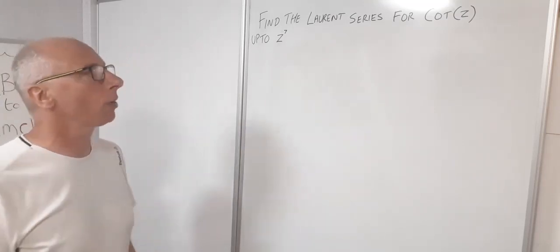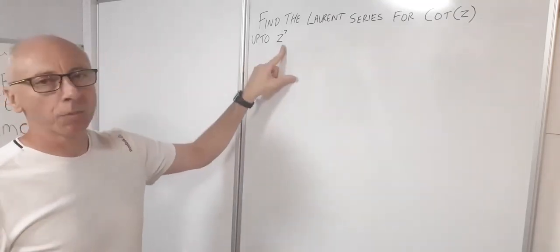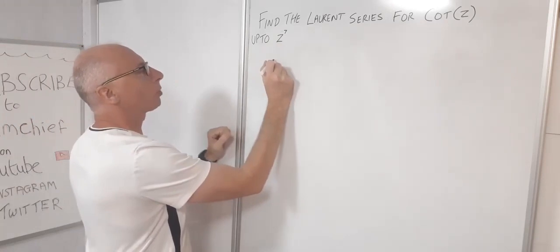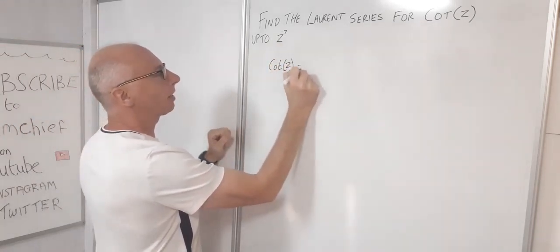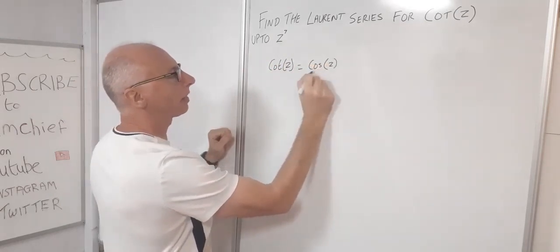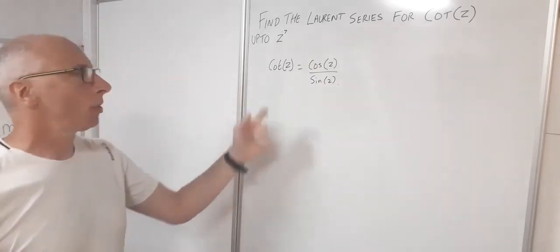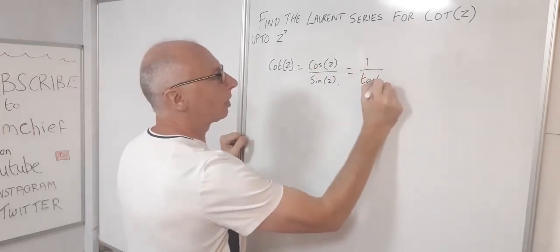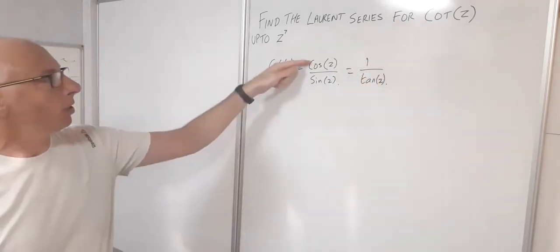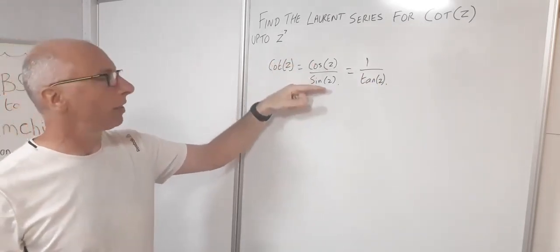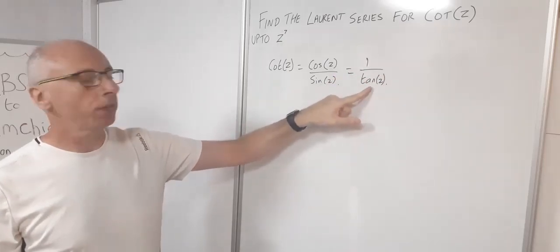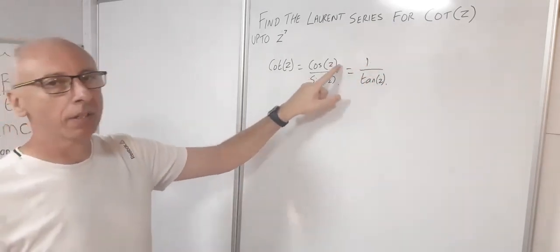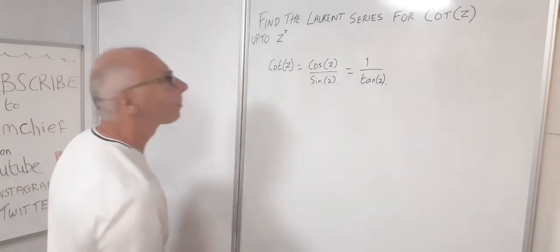This question is asking us to find the Laurent series for the cotangent function, and we want to find it up to the seventh term. In the previous video I did the cotangent function as cosine of z over sine of z, so we used that formula. We could also write it as one over tangent of z. Here we used the Taylor series for both functions and did long division. This time I'm going to use the 1/tan(z) method instead.